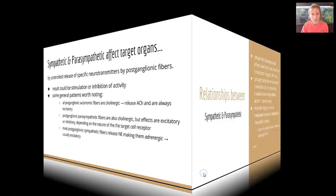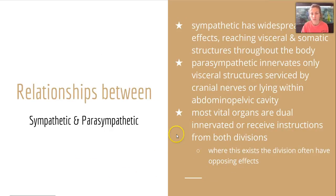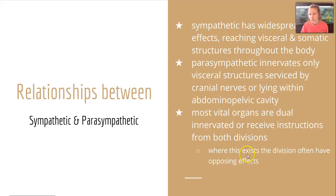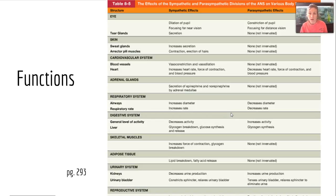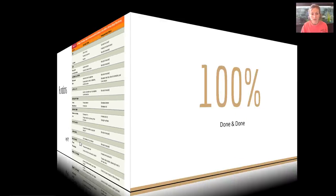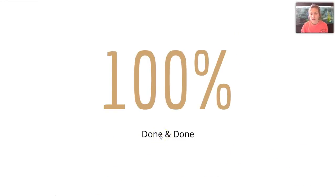The sympathetic division has widespread effects, reaching visceral and somatic structures throughout the body. The parasympathetic innervates only visceral structures serviced by cranial nerves or within the abdominal-pelvic cavity. Most vital organs are dually innervated, receiving instructions from both divisions, and the divisions often have opposing effects. There's a very important table here — also on page 293 of your book — showing sympathetic and parasympathetic effects on various structures and systems. Jot down that chart. That's all for Chapter 8 — see you guys next time.